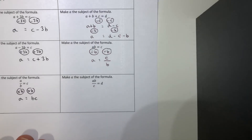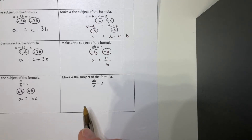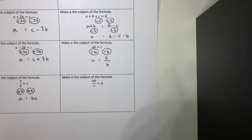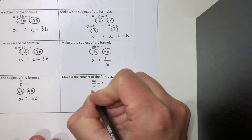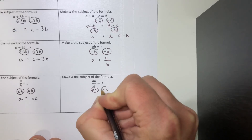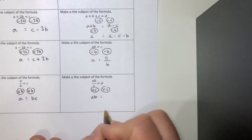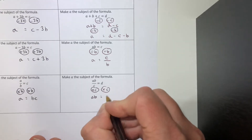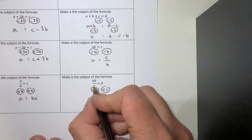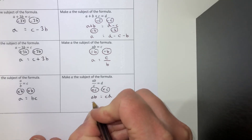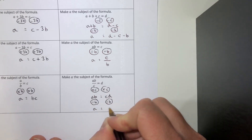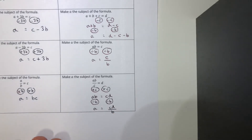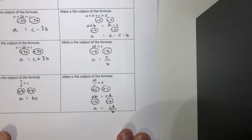The last one - the trickiest. We've got ab divided by c equals d. We want a on its own. I always think get rid of the bits furthest away first. The b is snuggled up to the a, but divide by c is further away, so get rid of that first - multiply both sides by c. That leaves ab on the left and d times c, which we write as cd on the right. Now we still have b lurking around, so divide both sides by b, and a equals cd divided by b is your final answer.